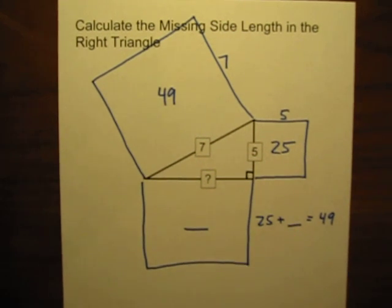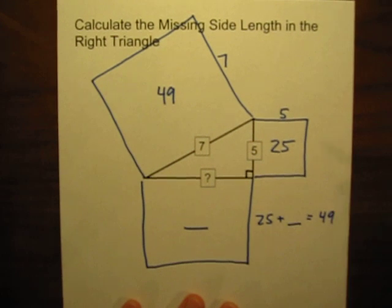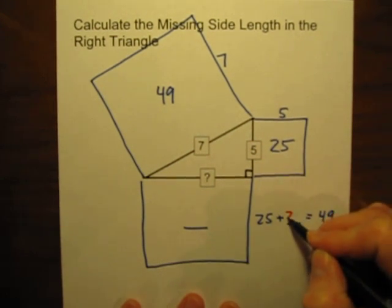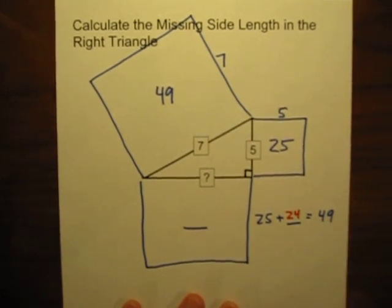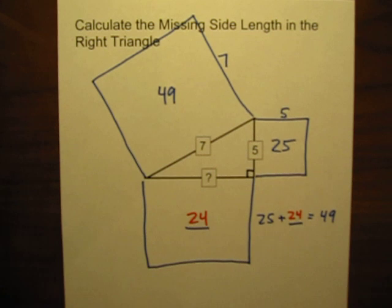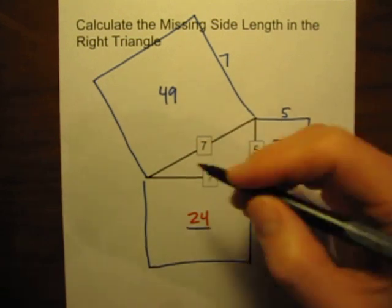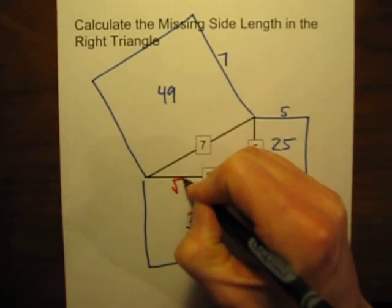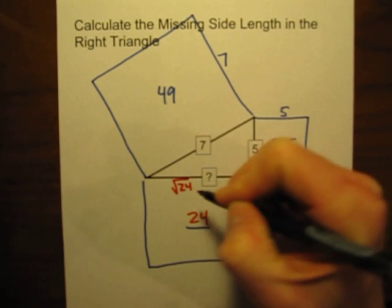Well, what does this square have to be? The area of this square has to be, there's only one possible number this could be, it has to be 24. 25 plus 24 equals 49, so the area here must be 24. If the area is 24, what's the side length? The side length is just simply the square root of that area. The square root of 24.